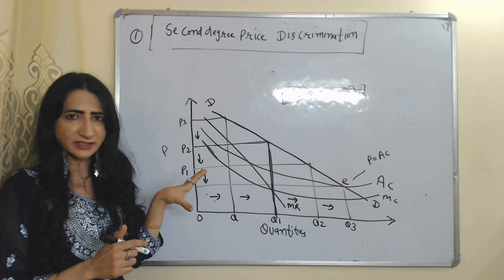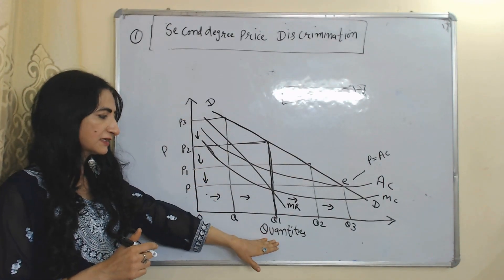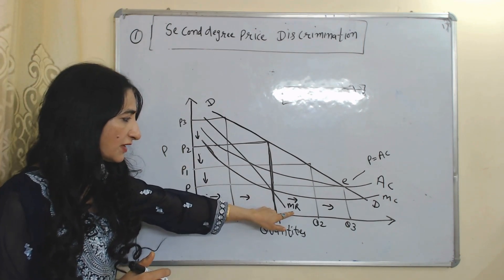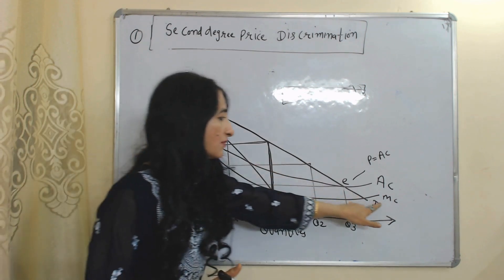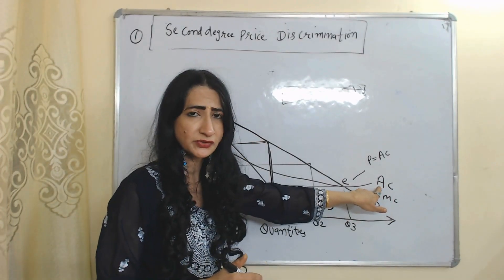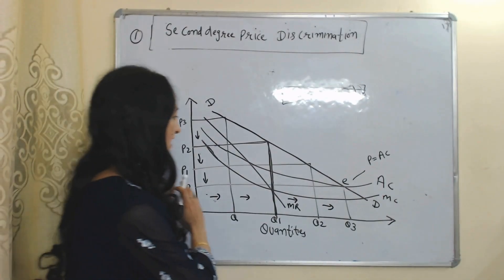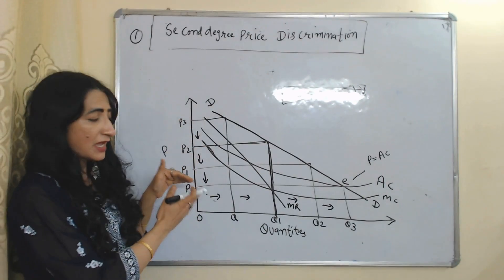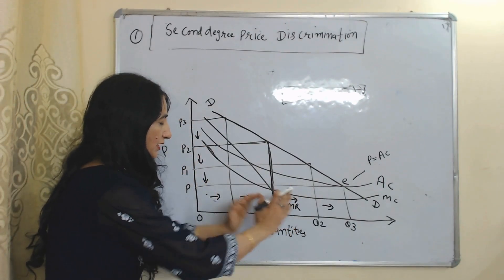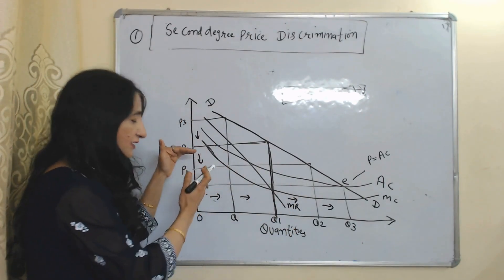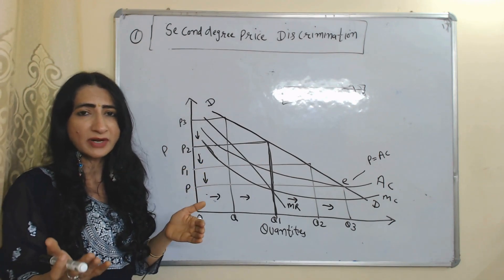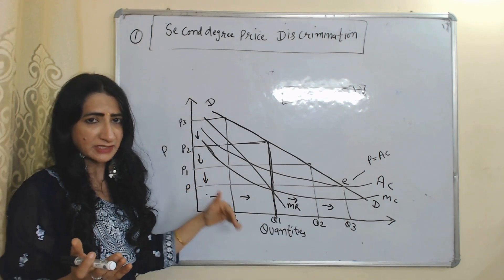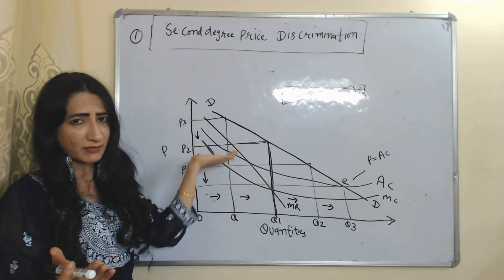Now we will see the diagram of second degree price discrimination. The X-axis represents quantities, the Y-axis represents price. There is a marginal revenue curve, demand curve, marginal cost curve, and average cost curve. As we increase the quantity of product, the price is reducing, because the seller is giving a quantity discount — if you buy more, you pay less; if you buy less, you pay more.